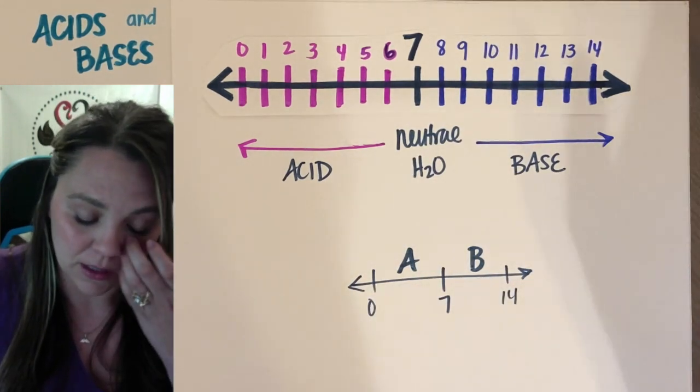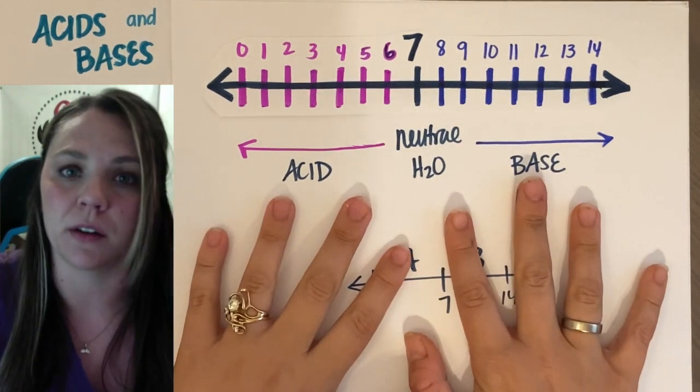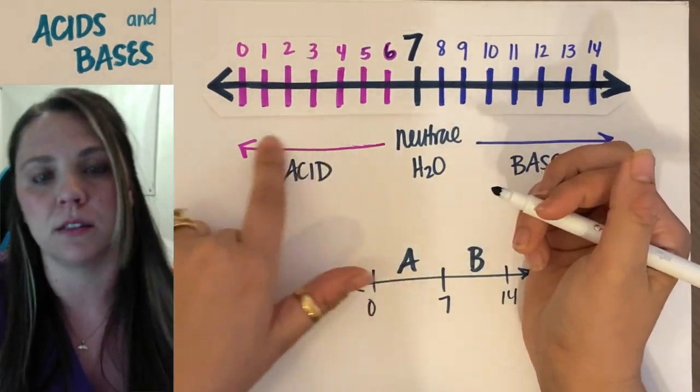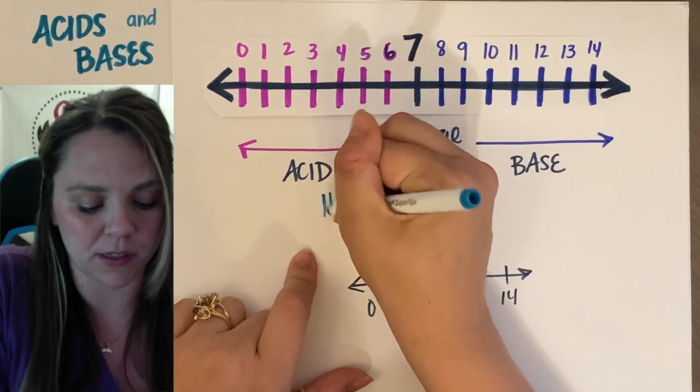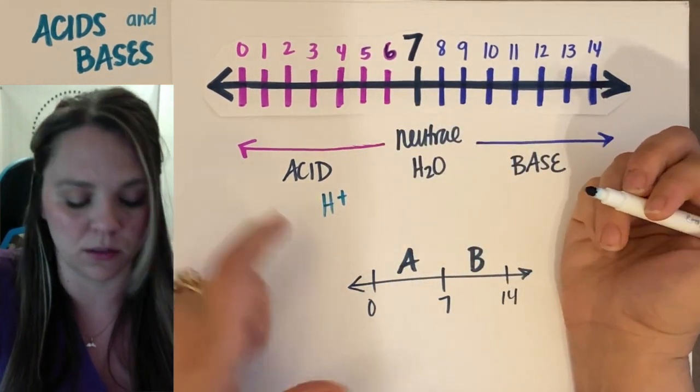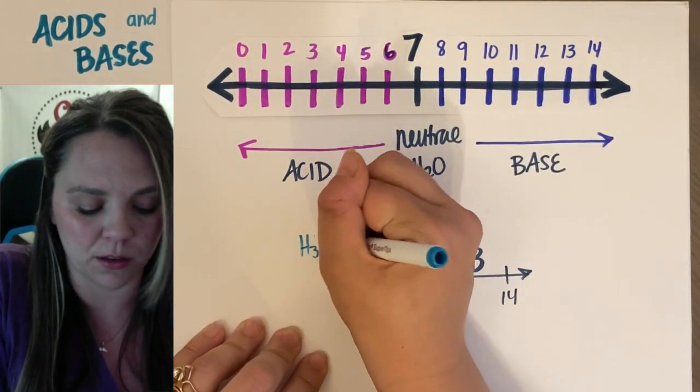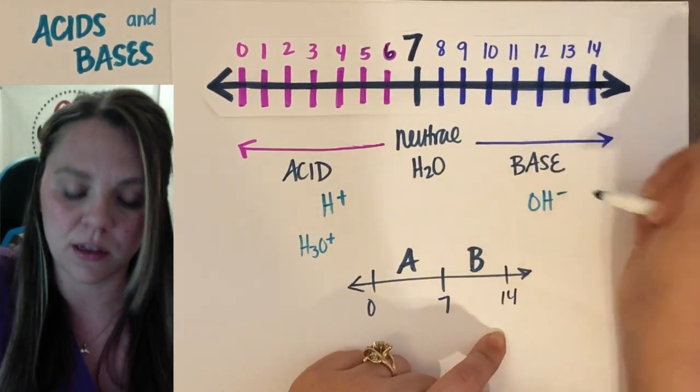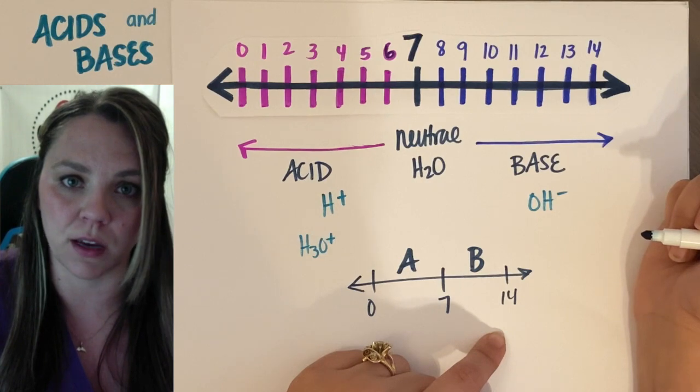Now, the cool part about your acid base and your pH, so to have an acid, you have to have some H+. Really, it's H3O+, but bear with me, you've got some H+. A base has OH-.